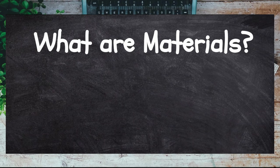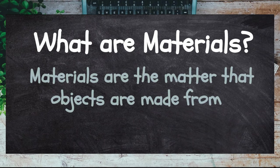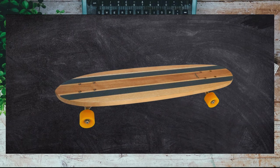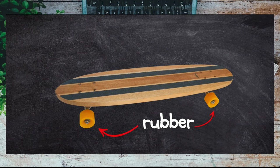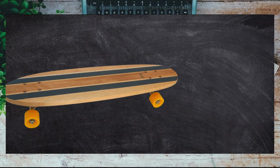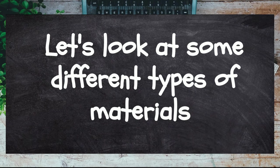What are materials? Materials are the matter that objects are made from. Take this skateboard for example: the board is made out of wood, the wheels out of rubber, and the screws and truck connecting the wheels are made from metal. Those are the skateboard's materials. Let's have a look at different types of materials.